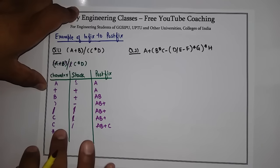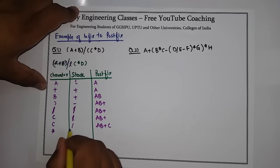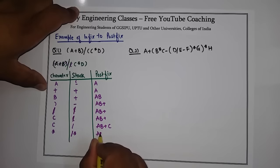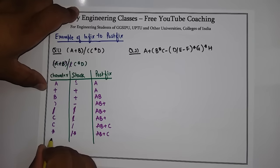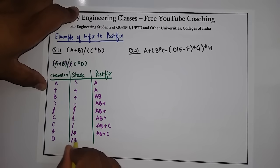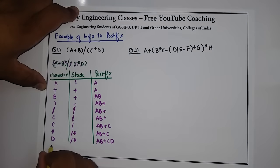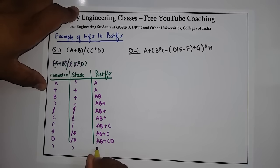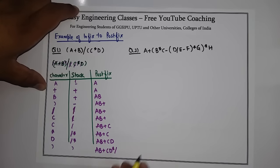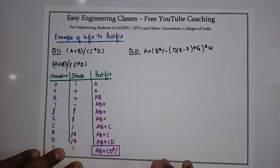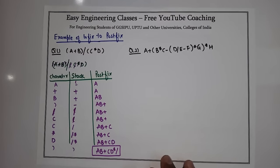Then we encounter star (*), which has the same precedence as division, so we add it into the stack. The postfix remains A B plus C. Then D is an operand, so we add it: A B plus C D. Then a right parenthesis is encountered, so we start popping. The final postfix becomes A B plus C D star division. This is the postfix expression for the given infix expression.